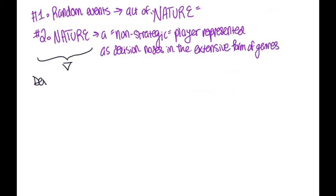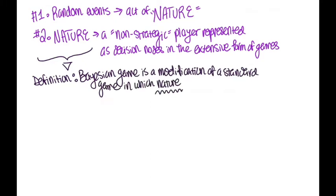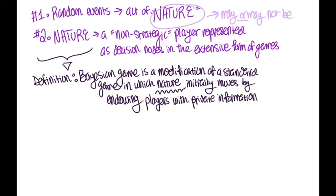So to summarize, a Bayesian game is a modification of a standard game in which nature initially moves by endowing players with private information. It's important to note that depending on the game, players may or may not be able to actually observe nature's actions.